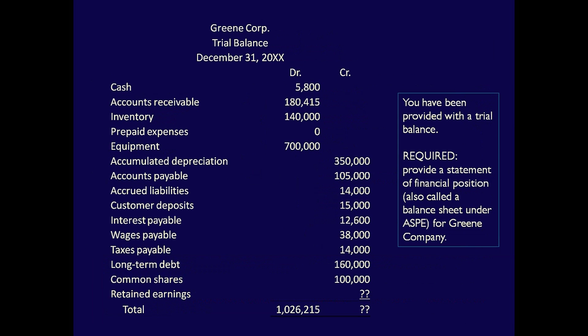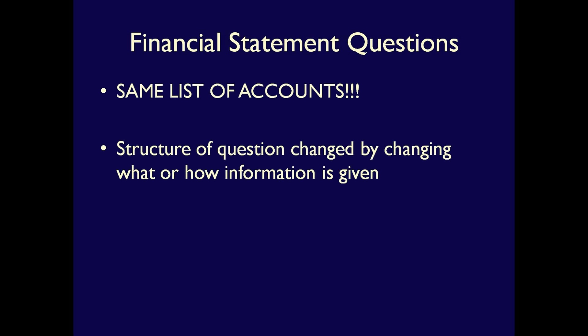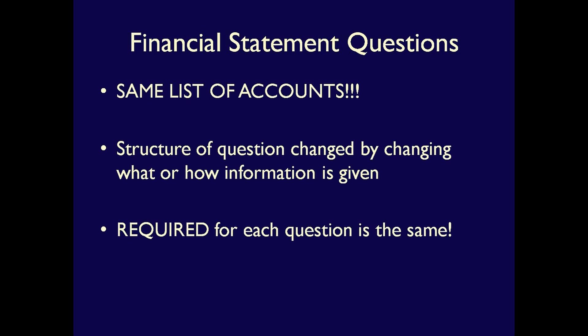A financial statement question can be structured in a few different ways. You might get a list of accounts in alphabetical order, in random order, or you might get incorrect financial statements that you have to correct. A final style is a trial balance — probably the easiest type, and one I almost never give my students. In each of these question styles, I used the exact same list of accounts but changed the structure. Although the structure differs, these questions are essentially the same because the required is the same — provide the financial statement.